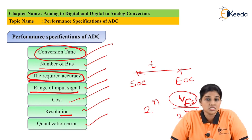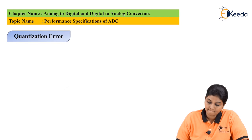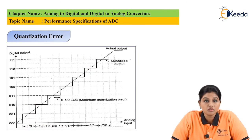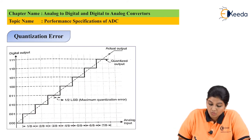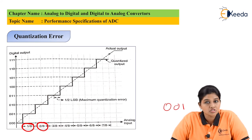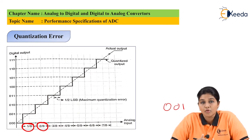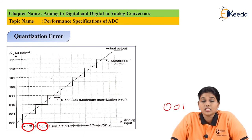The last and very important parameter from an application point of view is quantization error. To understand quantization error, let's consider a graph. When an analog signal gets converted into a digital signal, the conversion may not be perfectly accurate because the signal is approximated. For example, if the signal is present between 1/8 and 2/8, the digital form of the signal becomes 001. This approximation is called quantization, and the error that occurs during this process is called quantization error. Quantization error can be reduced by increasing the number of bits, which also increases the resolution of the ADC.